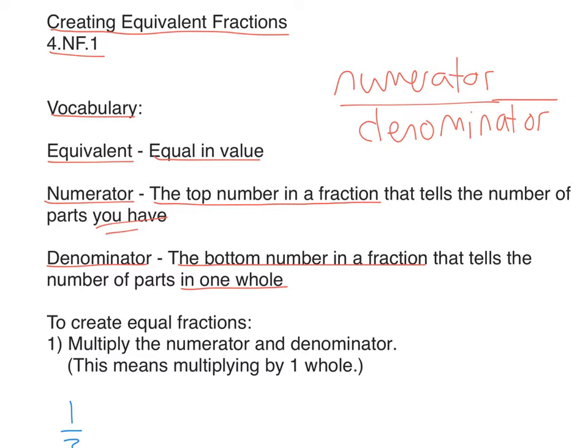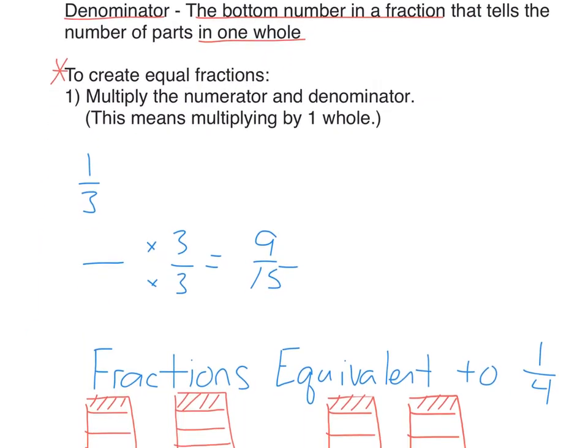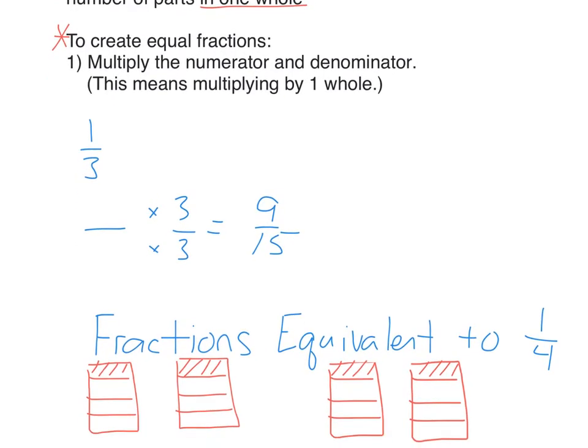Okay, so here is our goal, to be able to create equal fractions. So check it out, there's only one step. To create equal fractions, you multiply the numerator and denominator by the same number. You have to multiply the numerator and denominator by the same number. This means multiplying by one whole, and I'll show you what I mean.